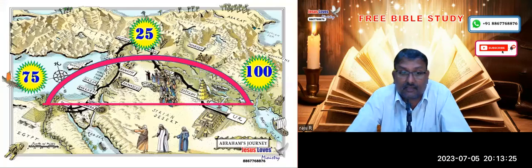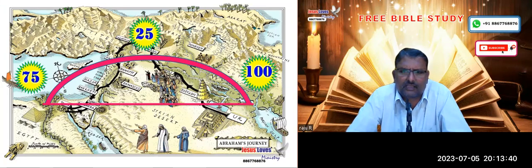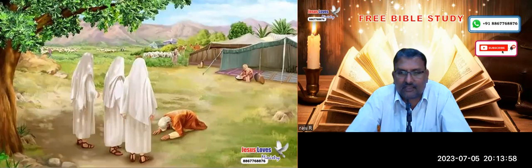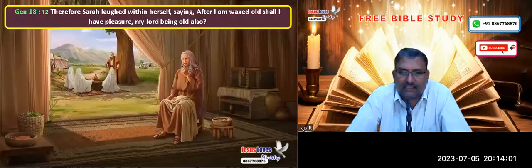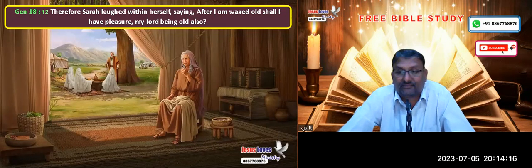Abraham had so much wealth but did not have an heir. When God told him to leave his place and come to the promised land, Abraham sojourned and traveled there, sacrificing all his friends, relatives, father, and brothers. After God made the promise to Abraham, nearly 25 years later, three angels appeared to him and revived his promise: 'In thee I will bless all the nations of the earth, and Sarah shall have a child.'